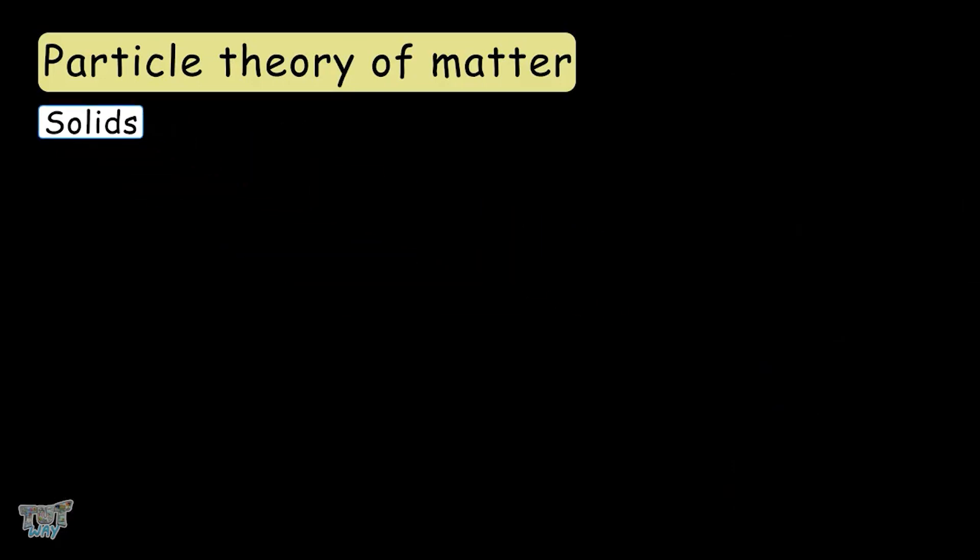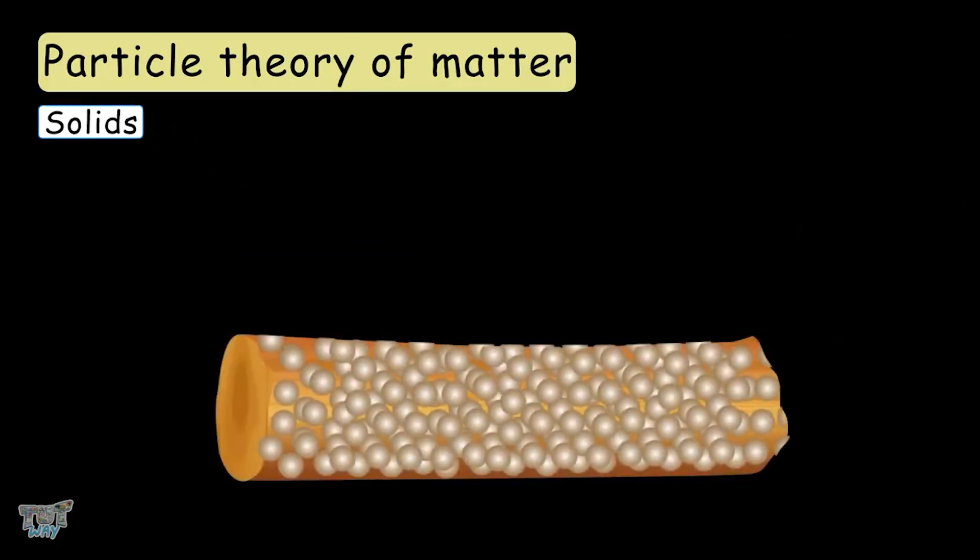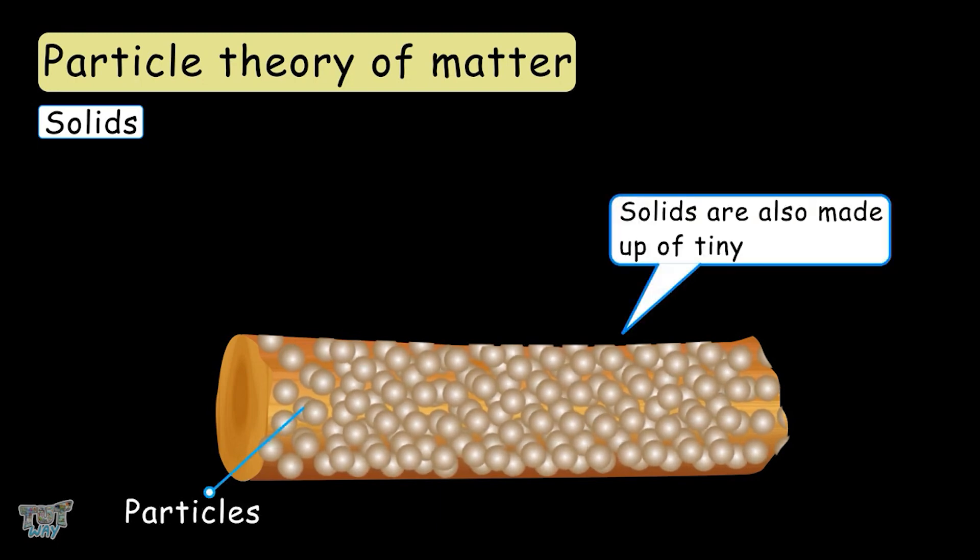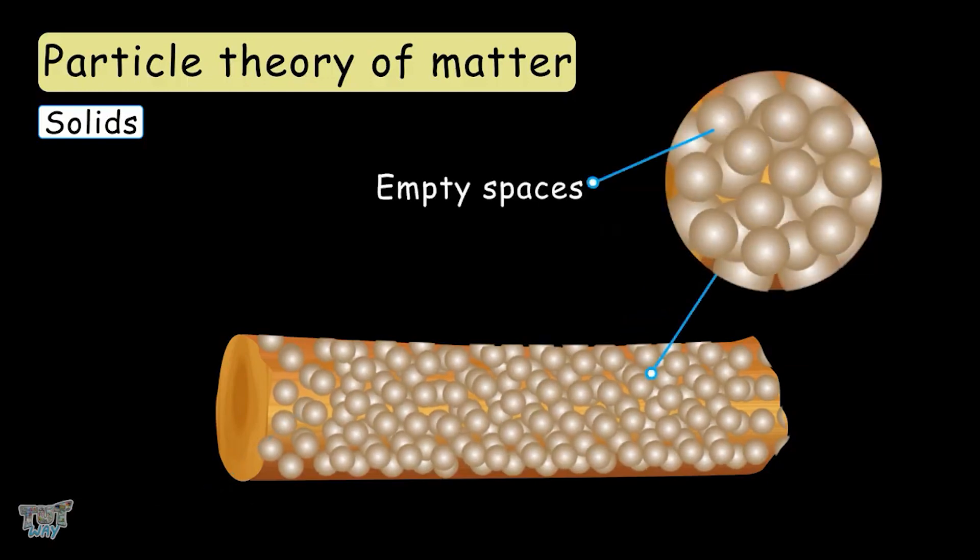Solids. As we learned, all types of matter are made up of tiny particles. So, solids are also made up of tiny particles. Second point was that particles have empty spaces between them. In the case of solids, the particles are very close to each other.